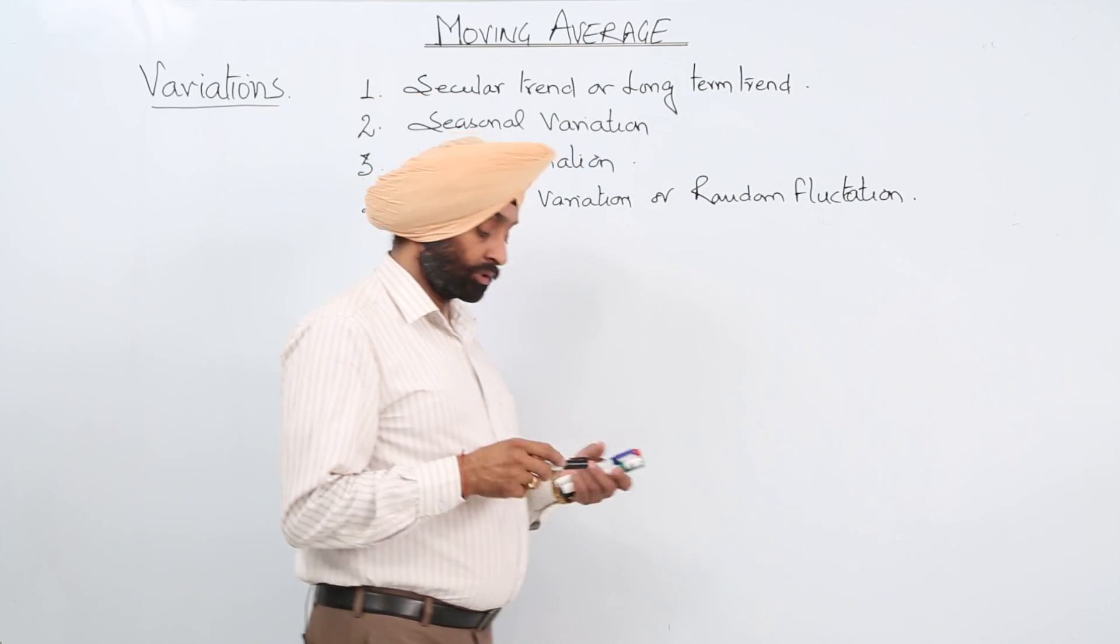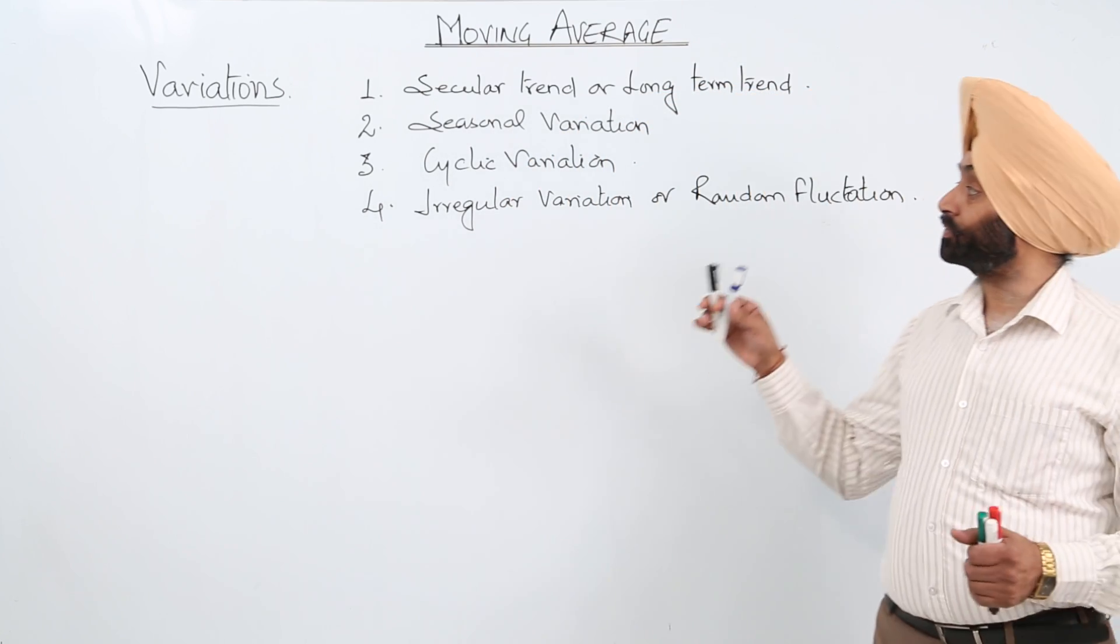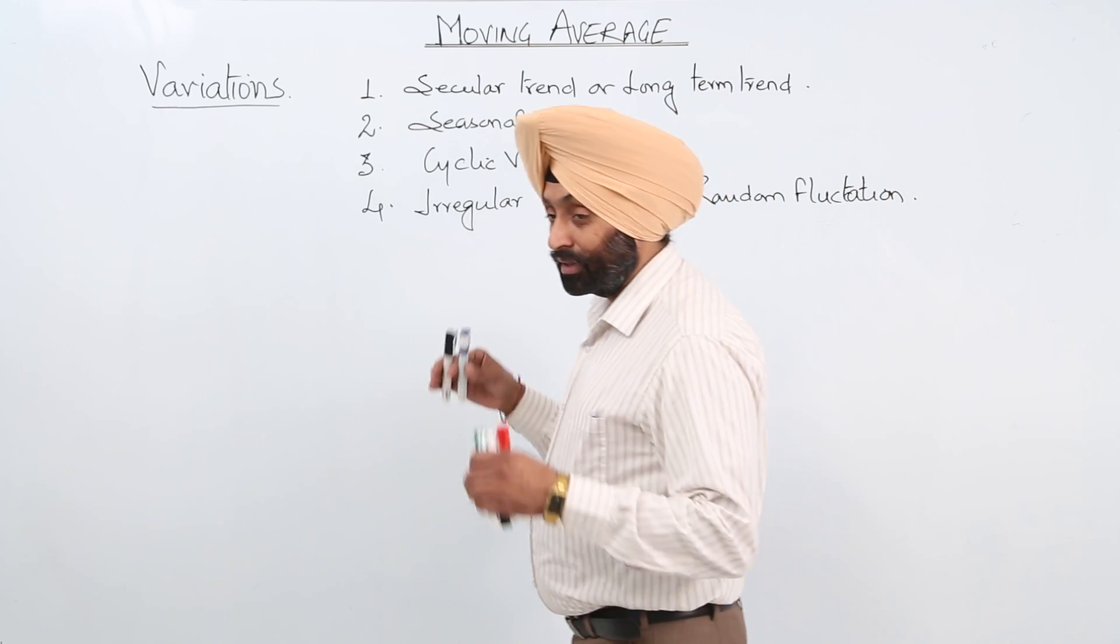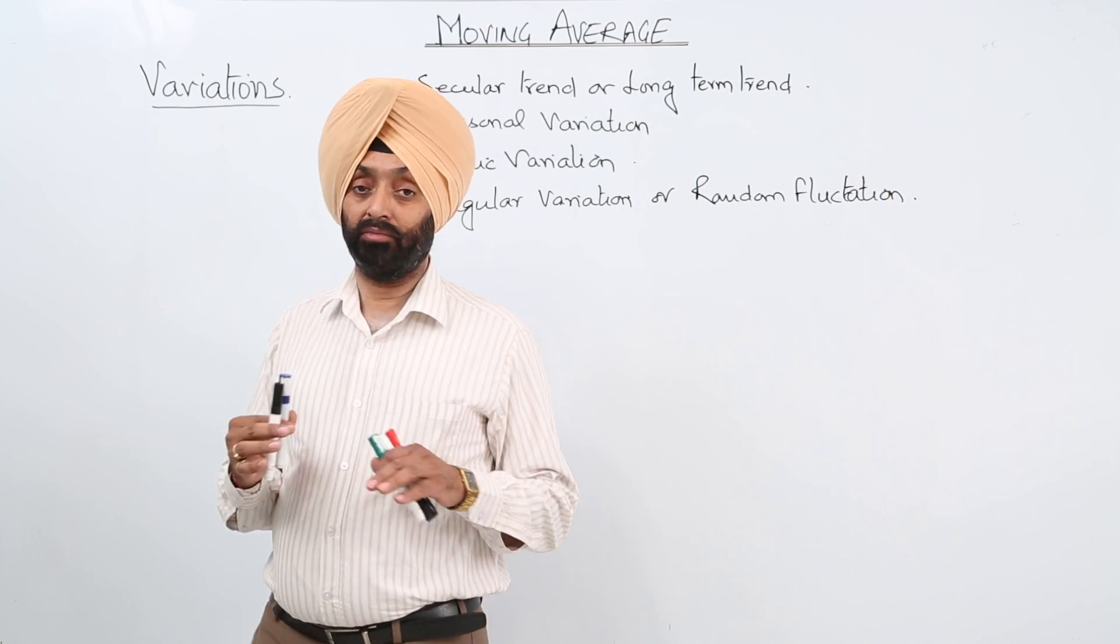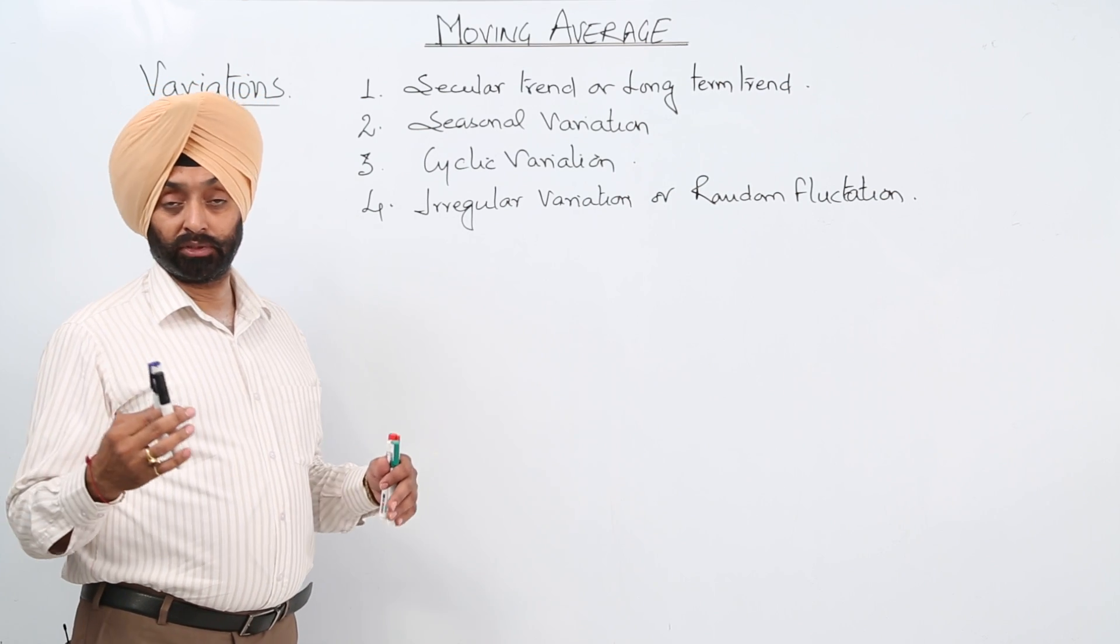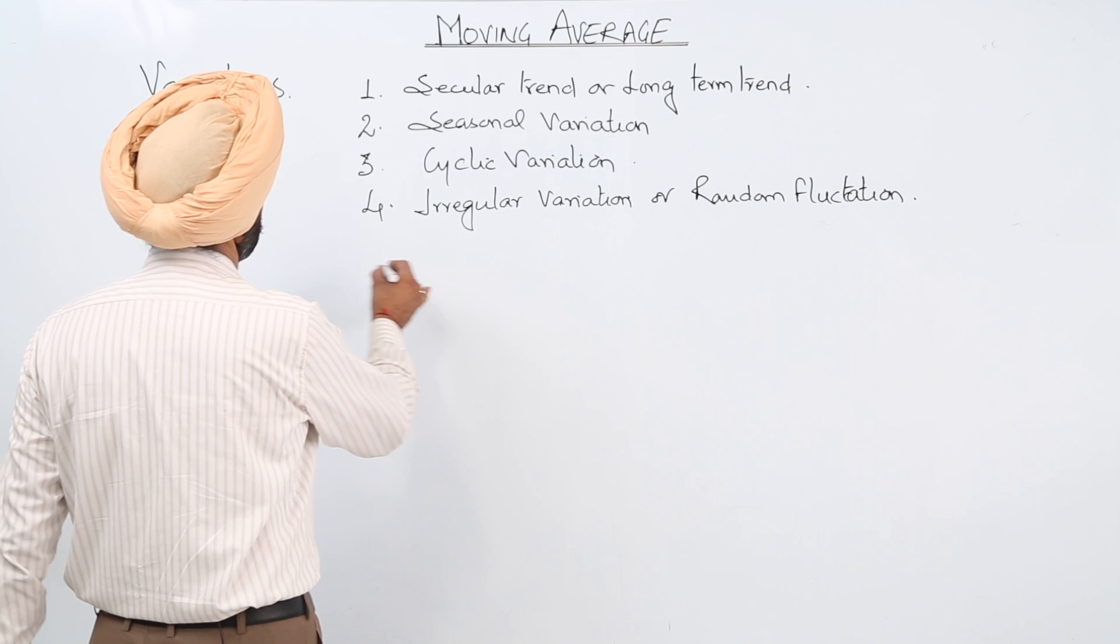Now first of all let's discuss all these four. First term is that is for the secular trend or a long term trend. So the increase or decrease in a time series with the long term, that is called a secular trend or a long term trend.